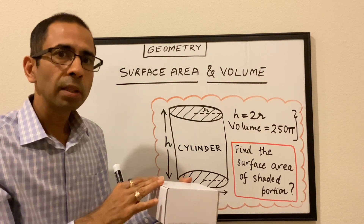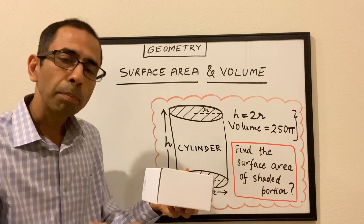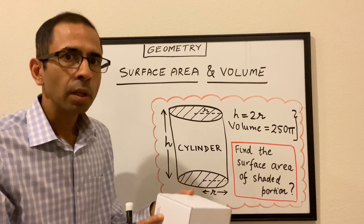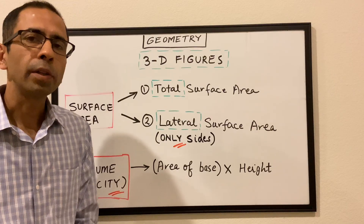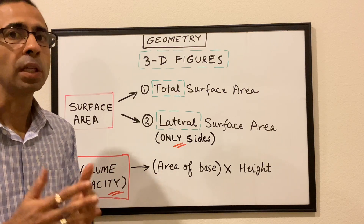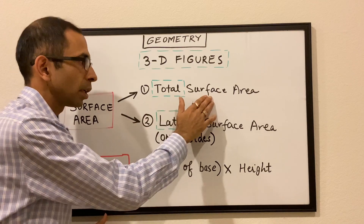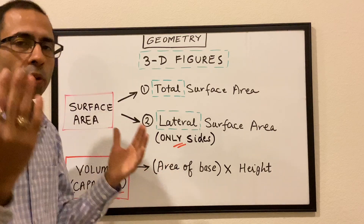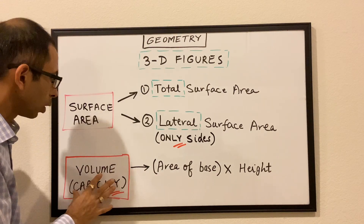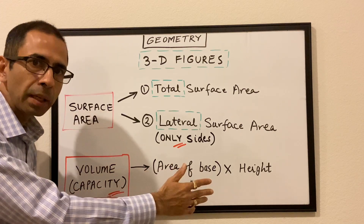Volume is nothing but the capacity contained within the box — the capacity contained within the three-dimensional figure. Typically, volume is given by the area of the base times the height. There are different types of shapes; this is a simple example of a cube and we will take different examples as we move forward. To reiterate: surface area and volume come into picture only for 3D figures — figures which have three dimensions, typically length, width, and height. There are two types of surface area: total and lateral. Volume gives the capacity contained by the 3D figure and equals area of base times height.